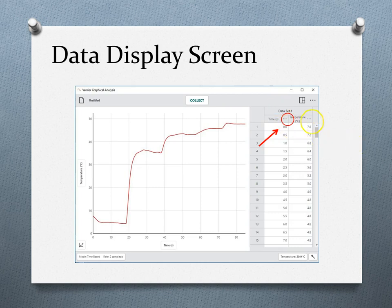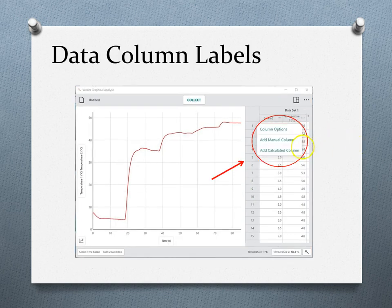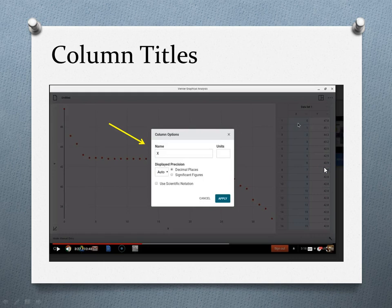If you click on those three dots, you'll get column options. If you don't like the titles they've put in, you can add them here. You can name them, put in the units, decide how many decimal places, use scientific notation, and then click apply. It gives you all kinds of options for your column titles and units.